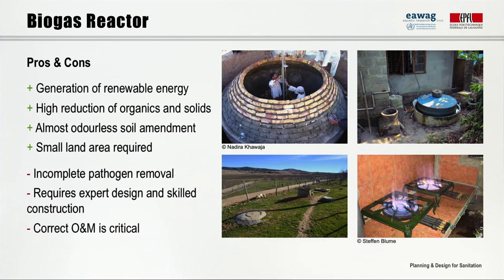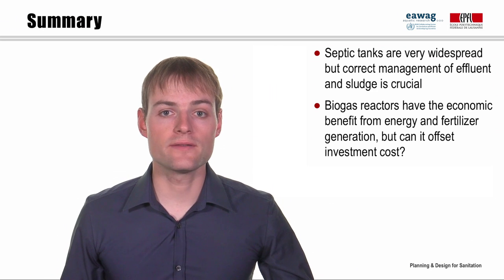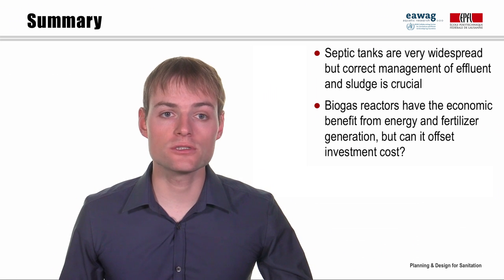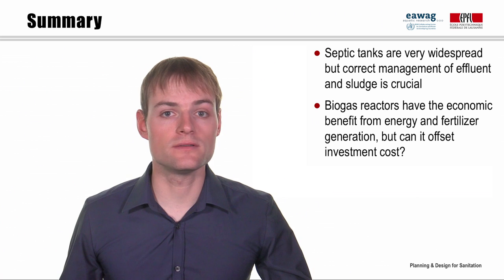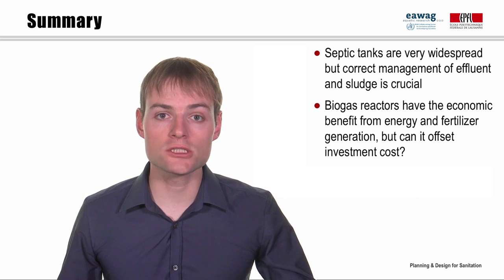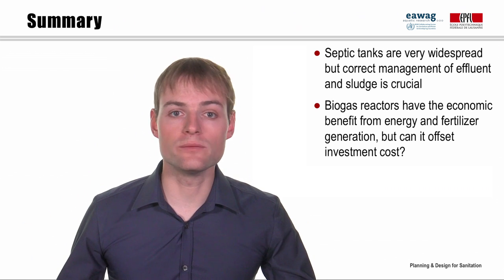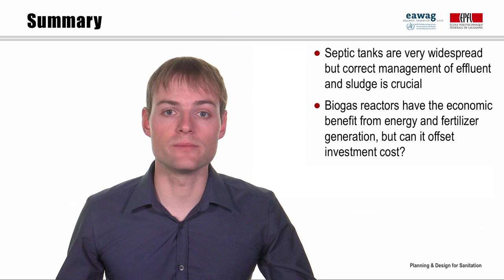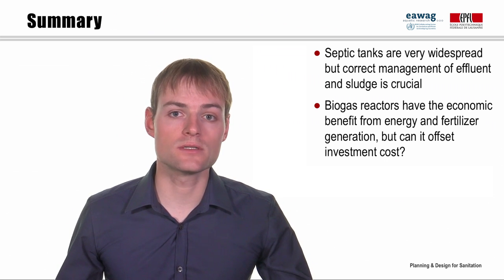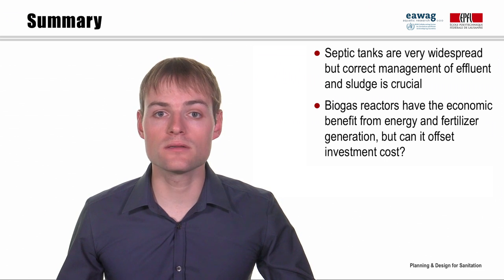The digestate is almost odorless and still contains all the nutrients, so it can be used as an excellent fertilizer. However, the agricultural application has to be done correctly and carefully because the digestate may still contain some pathogens. This technology has many benefits, but its success depends on correct implementation by experts, proper operation and regular maintenance. Septic tanks can be a good solution, but it is important that the effluent is properly disposed of and that the sludge is regularly removed. The biogas reactor can be an attractive technology, but the economic benefits do not mean it is always automatically successful — whether the initial investment costs can be recovered will depend on correct design, implementation and a motivated operator.